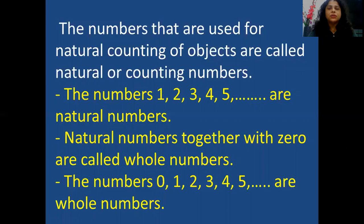Natural numbers together with 0 are called whole numbers. The numbers 0, 1, 2, 3, 4, 5, 6 and so on are whole numbers. So what is the difference between natural numbers and whole numbers? Natural numbers start from 1, whereas whole numbers start from 0.